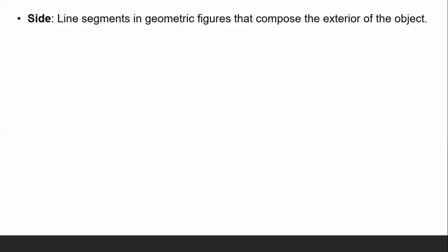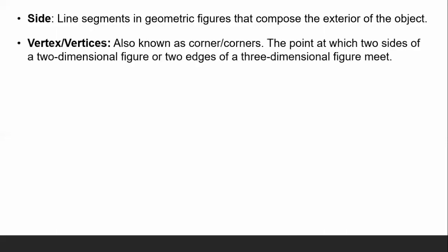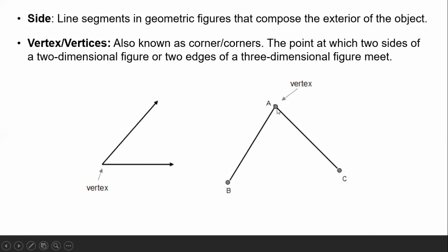Side refers to line segments in geometric figures that compose the exterior of the object. Vertex — or vertices when plural — is also known as a corner. It is the point at which two sides of a two-dimensional figure or two edges of a three-dimensional figure meet.